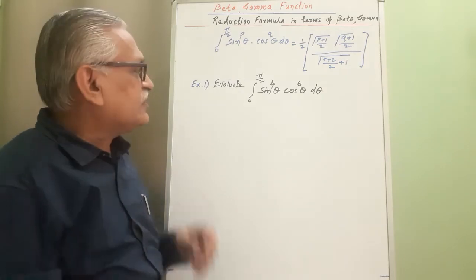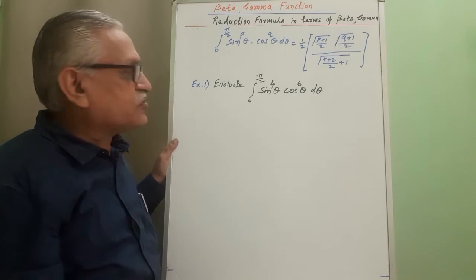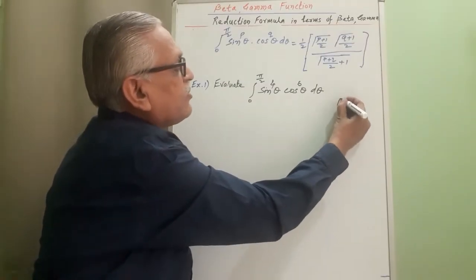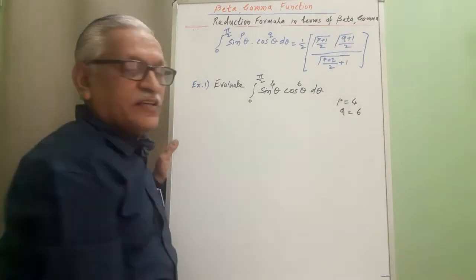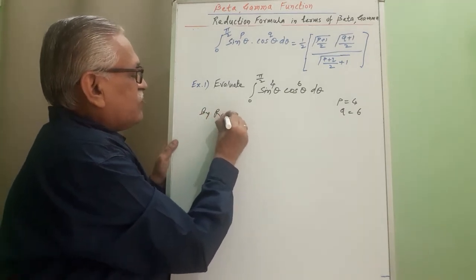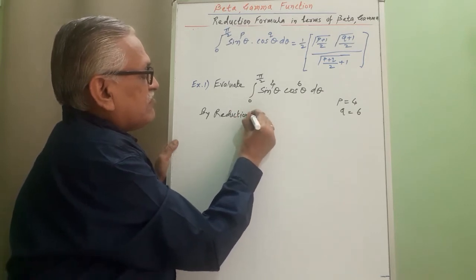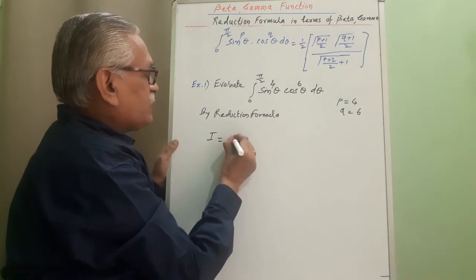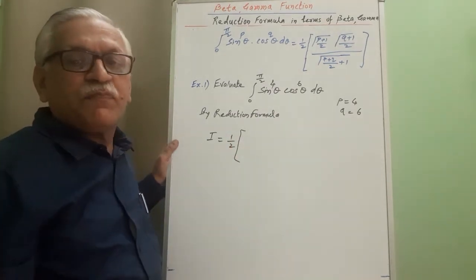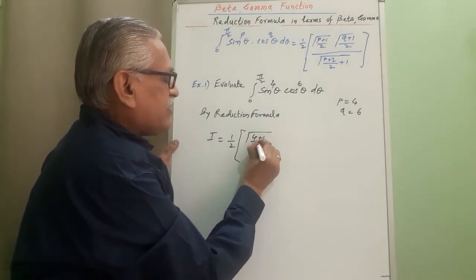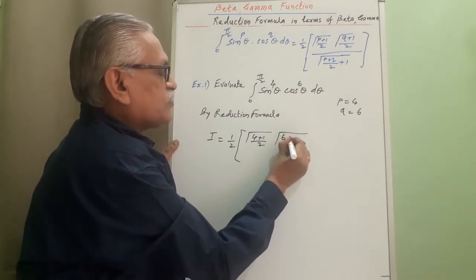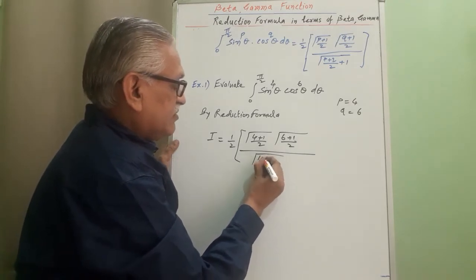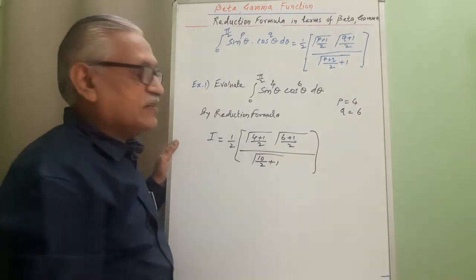First problem: evaluate the integral from 0 to π/2 of sin⁴θ cos⁶θ dθ. We apply the reduction formula, comparing to identify P equals 4 and Q equals 6. By the reduction formula, calling the integral I, we get I equals (1/2) times gamma((4+1)/2) times gamma((6+1)/2), divided by gamma((4+6)/2 + 1), which simplifies to (1/2) times gamma(5/2) times gamma(7/2), divided by gamma(6).